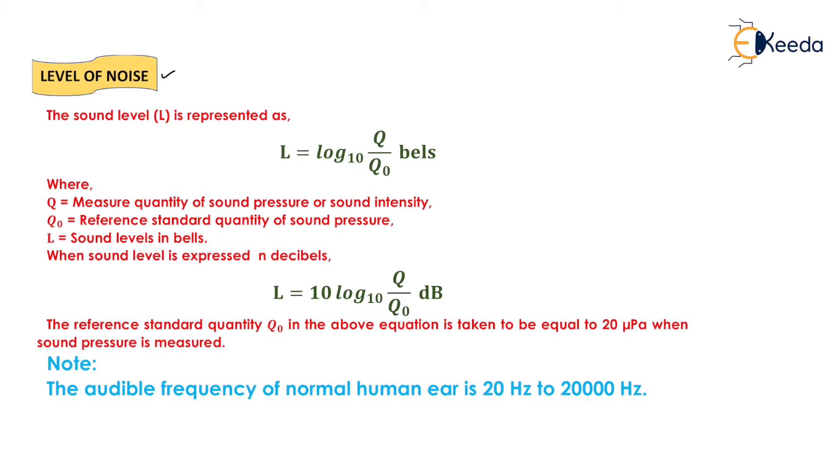Now we need to find the level of noise. For the calculation of level of noise, the formula will be log10 q by q0 in bells. But if we want to calculate the answer in decibels, then we have to use the formula 10 log10 q by q0, where q is the measured quantity of sound pressure or sound intensity and q0 is the reference standard quantity of sound pressure.